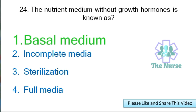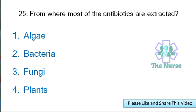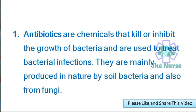Next question: From where are most antibiotics extracted? — Algae, bacteria, fungi, or plants? Correct answer: bacteria. Antibiotics are chemicals that kill or inhibit the growth of bacteria and are used to treat bacterial infections. They are mainly produced in nature by soil bacteria and also from fungi.